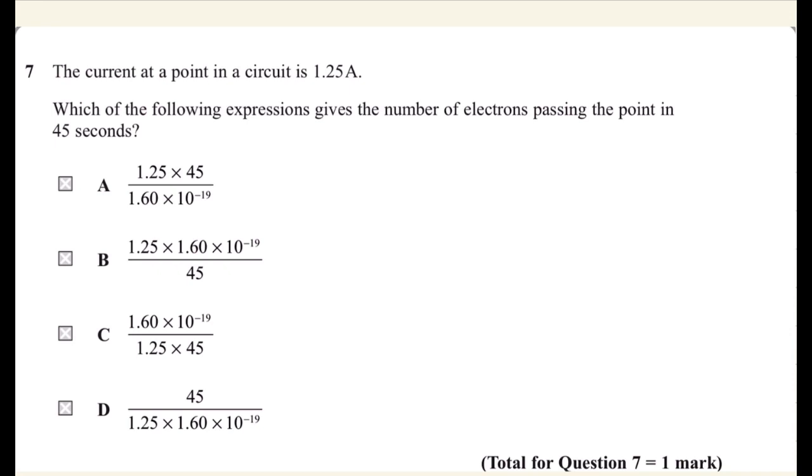There is a formula linking I equals Q over t, the amount of charges passing through the wire at a point in unit time. But this amount means a number of charges times the value of the charge divided by t.